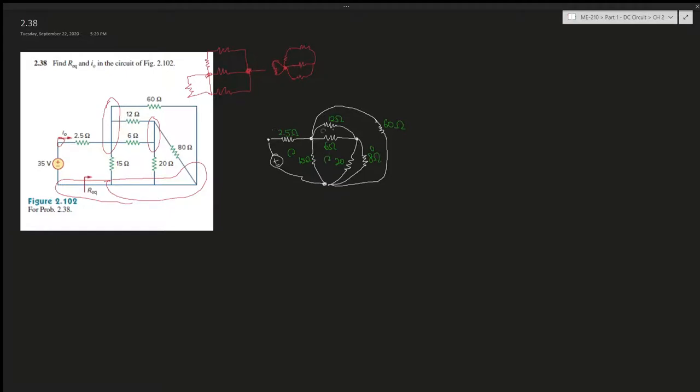Interestingly enough, there's one loop, two loop, three, four, five loops. So the number of knots, one, two, three, four, plus the number of loops, one, two, three, four, five, minus one, equals the number of branches: one, two, three, four, five, six, seven, eight branches. The number of loops plus the number of knots minus one gives you the number of elements. Always.